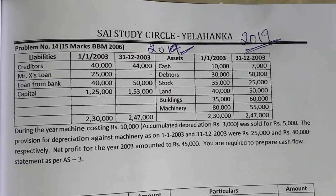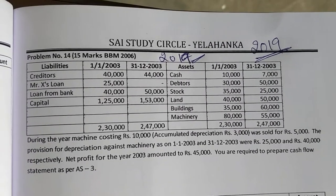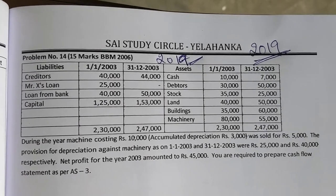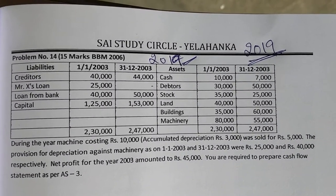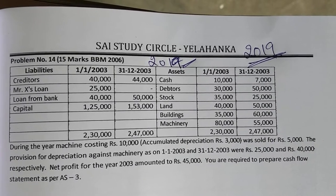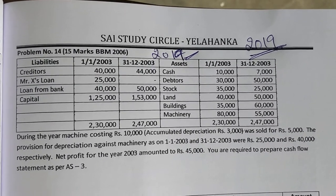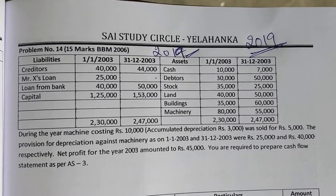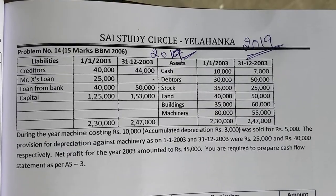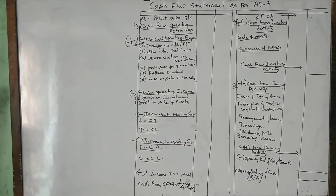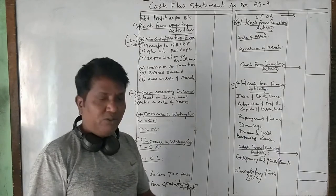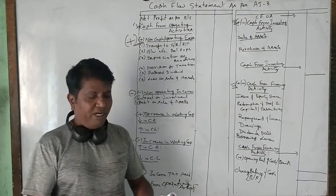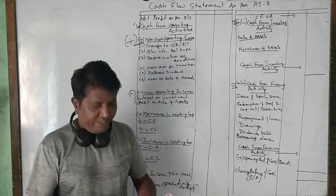Please try to write this question in your book so that it will be helpful for you in understanding. Let us read this question — in the year 2019 for B.Com and BBM students, and in the year 2006.